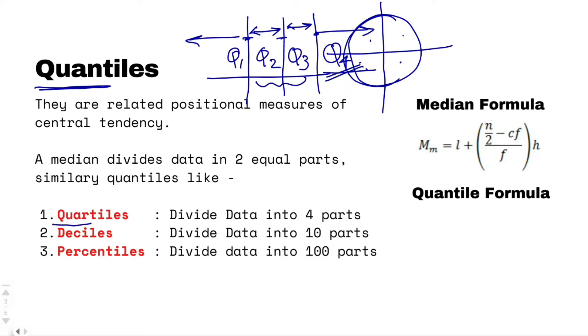To find the quantiles formula, we need to recap on the medians formula. What was the medians formula? In medians formula, it was lower limit plus n by 2. That is, we were dividing our entire data set into 2 minus the previous cumulative frequency, and the whole divided by the total frequency multiplied by class interval. This was our medians formula.